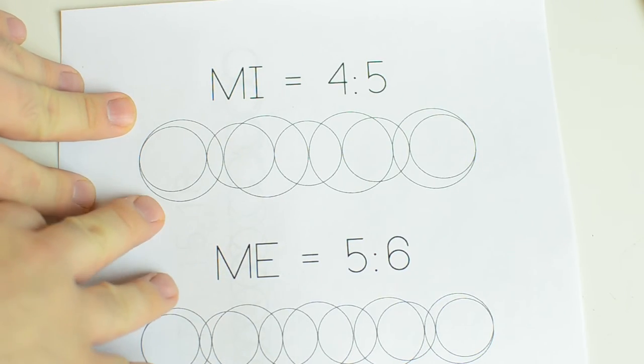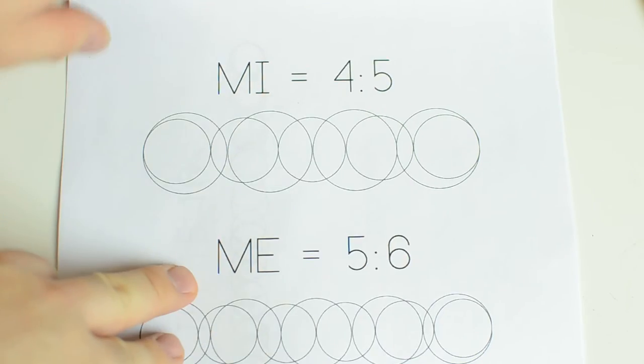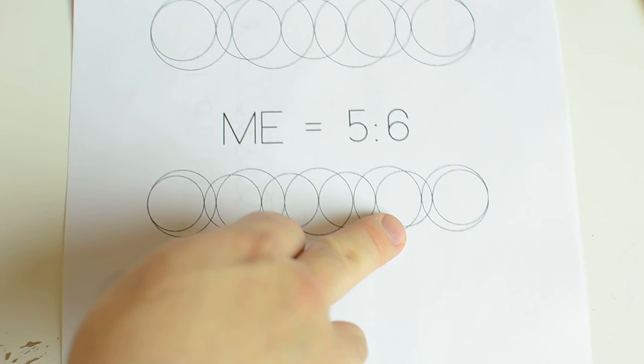MI, which is the major third, is a four to five ratio. The minor MI is a five to six ratio.